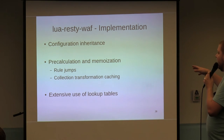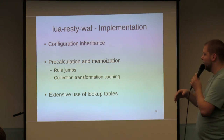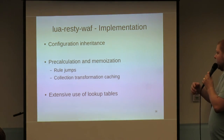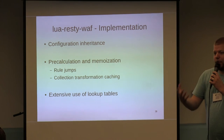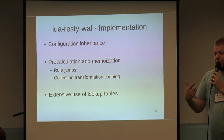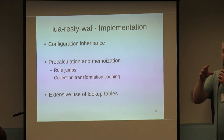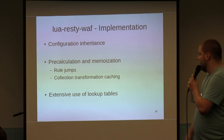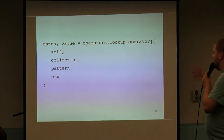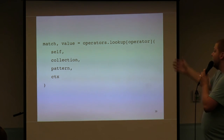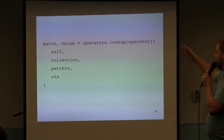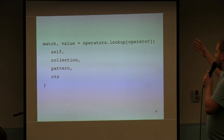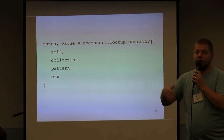Some implementation details: we do a lot of memoization of functions. When we get data and apply anti-evasion transformations to request headers, rather than re-running that calculation every time, we memoize it and reference it the next time that particular lookup appears. We make extensive use of lookup tables. For doing a lookup, we use a lookup table called lookup in the operators module that takes a self-reference, a collection, a pattern, and a transactional context table, and returns a boolean for whether it matched and the matched value. This lets us write new operators quickly without a lot of boilerplate.